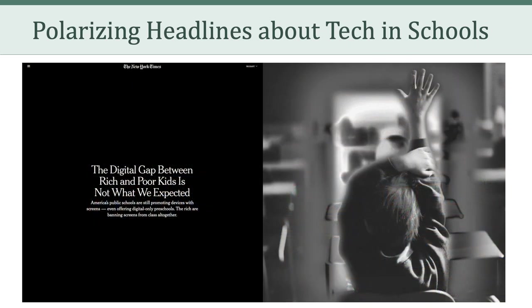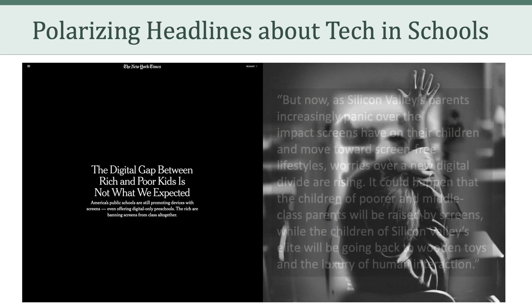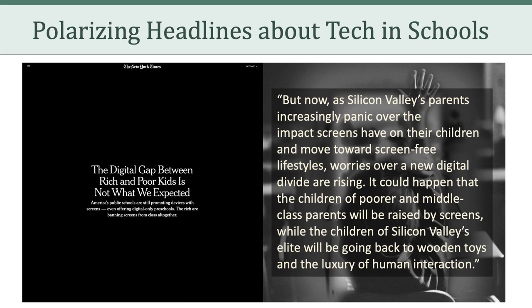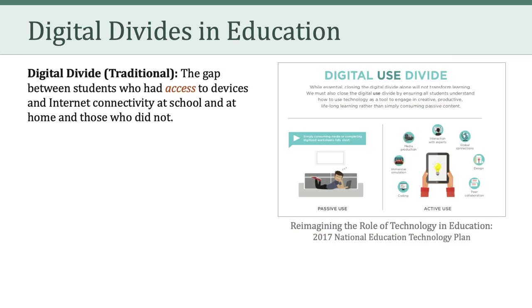Take a look at this October 2018 story in the New York Times titled 'The Digital Gap Between Rich and Poor Kids Is Not What We Expected.' The subtitle reads: 'America's public schools are still promoting devices with screens, even offering digital-only preschools. The rich are banning screens from class altogether.' As Silicon Valley's parents increasingly panic over the impact screens have on their children and move towards screen-free lifestyles, worries over a new digital divide are rising. It could happen that the children of poorer and middle-class parents will be raised by screens, while the children of Silicon Valley's elite will be going back to wooden toys and the luxury of human interaction. I want to highlight the words 'new digital divide.'